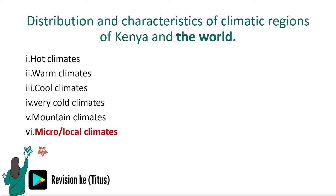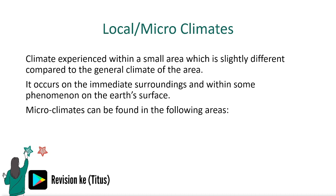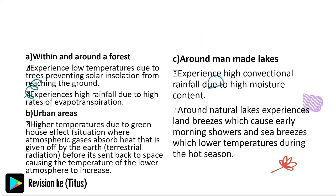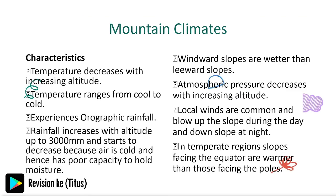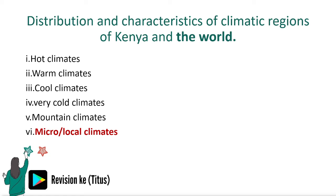Finally, we have the micro or local climates — the climate experienced within a small area which is slightly different compared to the general climate of the surrounding area. Micro climates can be found within and around a forest, around urban areas, and around man-made lakes. A quick review: the climatic regions of the world include hot climates, warm climates, cool climates, very cold climates, mountain climates, and micro or local climates.